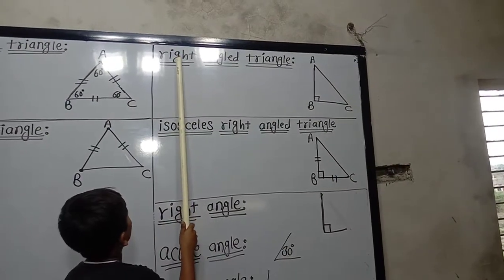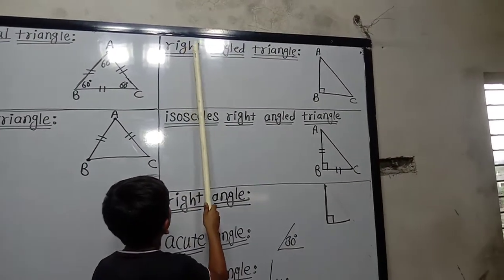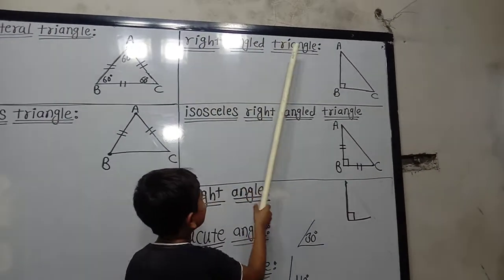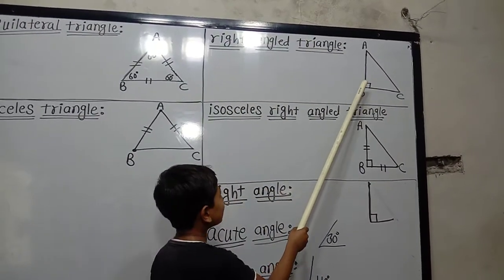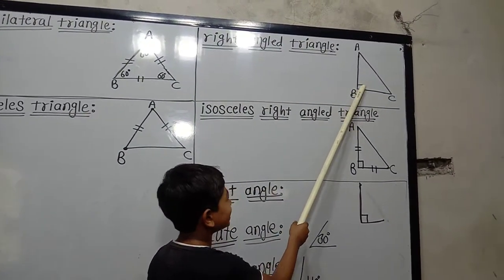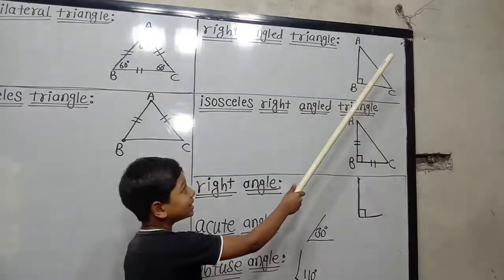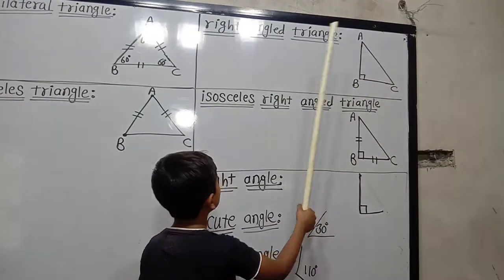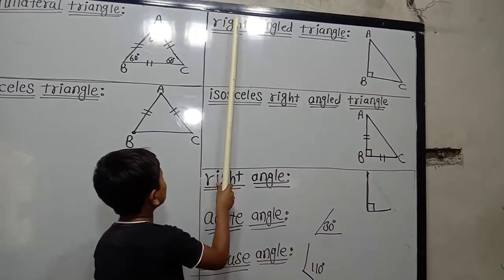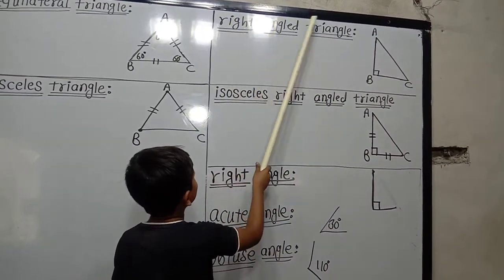Right angle triangle: if one angle of a triangle is 90 degrees, then that triangle is called a right angle triangle.